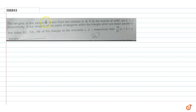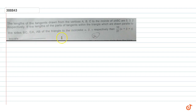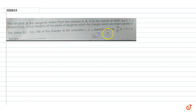The length of the tangents drawn from the vertices A, B, C to the incircle of triangle ABC are 5, 3, and 2 respectively. If the length of the parts of tangents within the triangle drawn parallel to the sides BC, CA, and AB to the incircle are alpha, beta, gamma respectively, then find 10/31 times of alpha plus beta plus gamma.